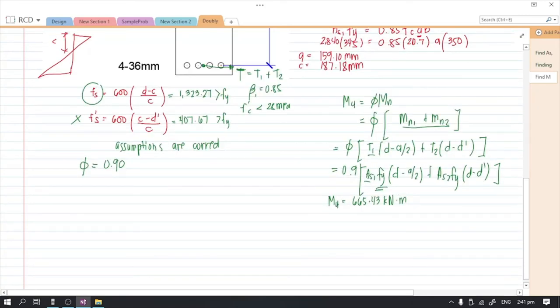Our ultimate moment is equivalent to 665.43 kilonewton meter. In my next video I will discuss case number two. Thank you.